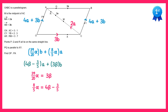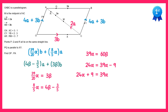Multiplying the first equation by 20 gives 39 alpha equals 60 beta. Multiplying the second equation by 15 gives 24 alpha equals 60 beta minus 9. Both equations now have 60 beta, so substituting 39 alpha for 60 beta in the second equation: 24 alpha equals 39 alpha minus 9. Adding 9 to both sides and subtracting 24 alpha gives 9 equals 15 alpha. Dividing by 15 gives alpha equals 9 over 15, which simplifies to 3 fifths.